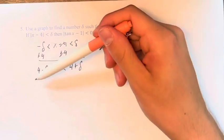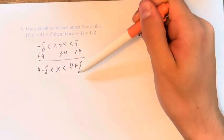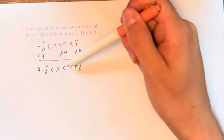So basically what this means is that we're looking at a range of x values that are no more than delta away from 4.